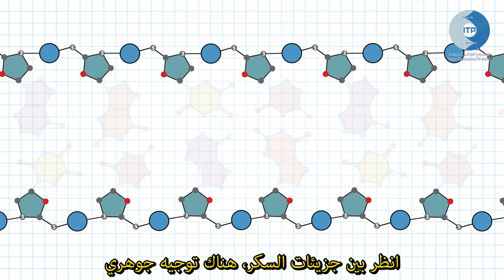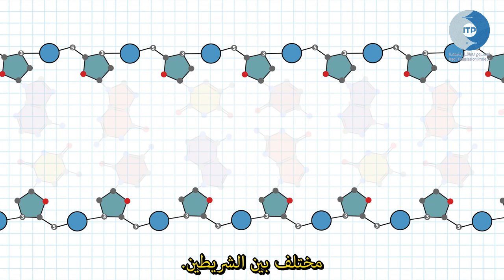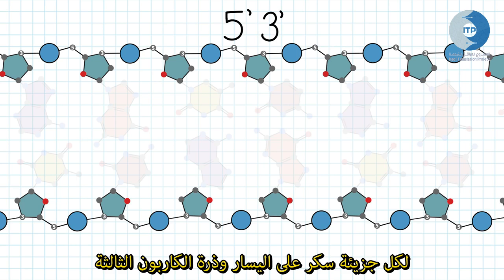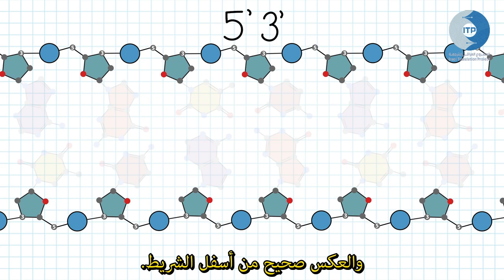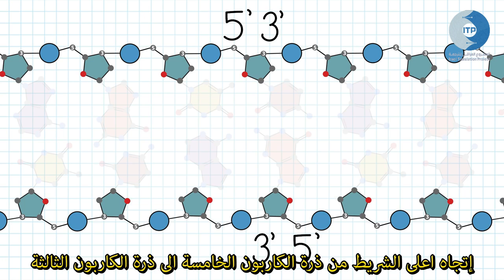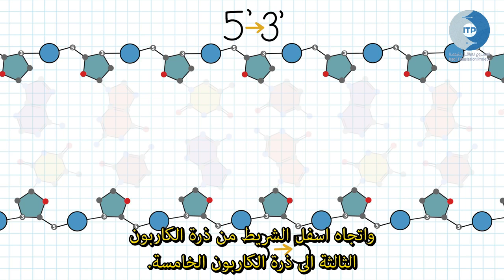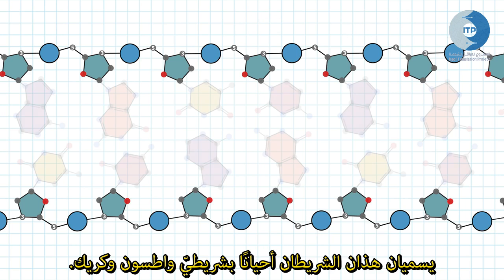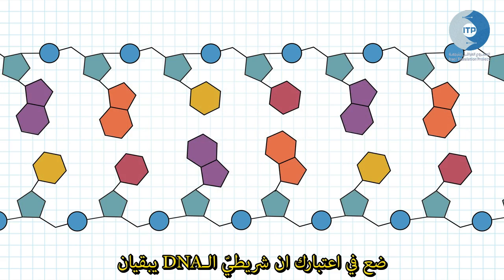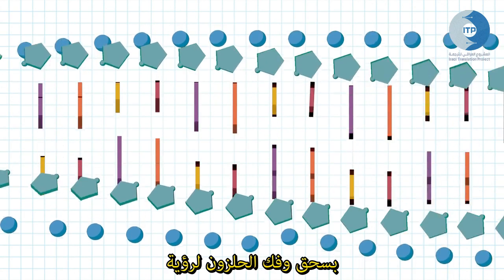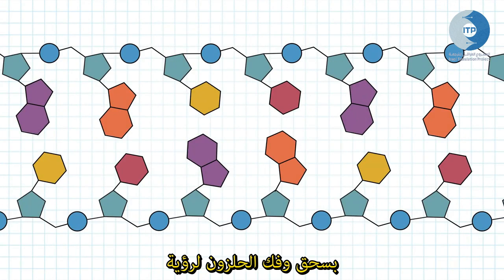Looking within the sugars, there is an intrinsic orientation difference between the two strands. On the top strand, you can see that the five prime carbon of each sugar is on the left, and the three prime carbon is on the right. The opposite is true for the bottom strand. Reading left to right, that makes the top strand orientation five prime to three prime, and the bottom strand orientation three prime to five prime. These strands are also sometimes called Watson and Crick. Keep in mind that this double-stranded DNA is still a double helix, and we have simplified the representation by flattening and unwinding the helix here to better see the atomic structure.